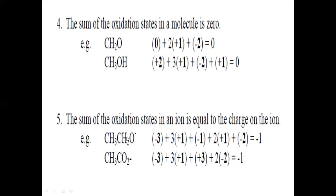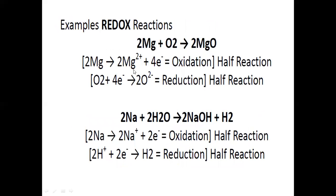For the ethoxide ion, the oxidation state calculation gives: minus three plus three, minus one, then two, plus one, then minus two for oxygen — totaling a charge of minus two. Now considering a redox reaction: oxidizing magnesium in the presence of oxygen produces magnesium oxide.